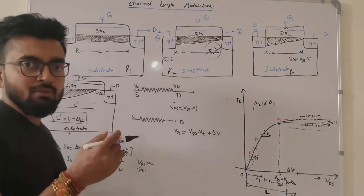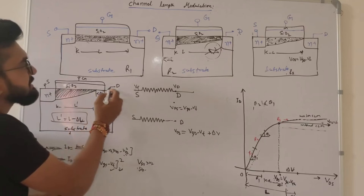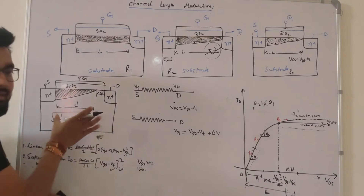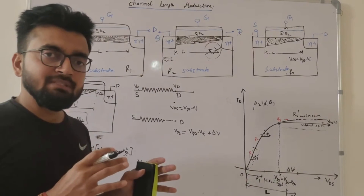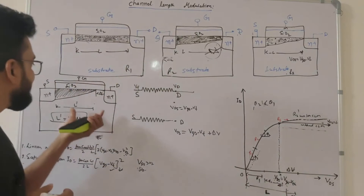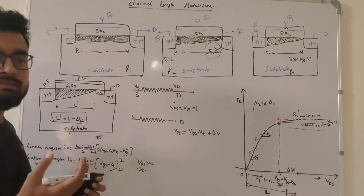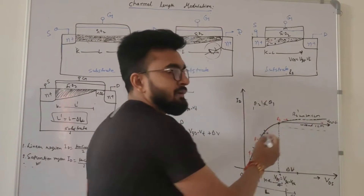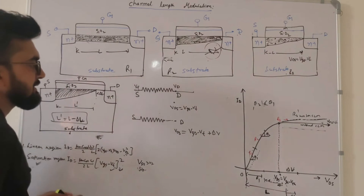In Region R3-dash, the actual channel length is reduced and we see a slight increase in current flow. This is because the output resistance of the MOSFET is directly proportional to channel length. Since the length has reduced from L to L dash, the resistance decreases, and since current is inversely proportional to resistance, we see a slight increase in current — producing the CLM curve in the MOSFET's saturation characteristics.